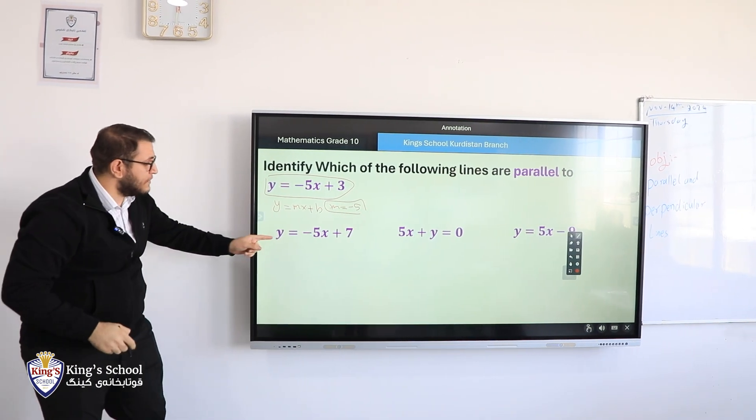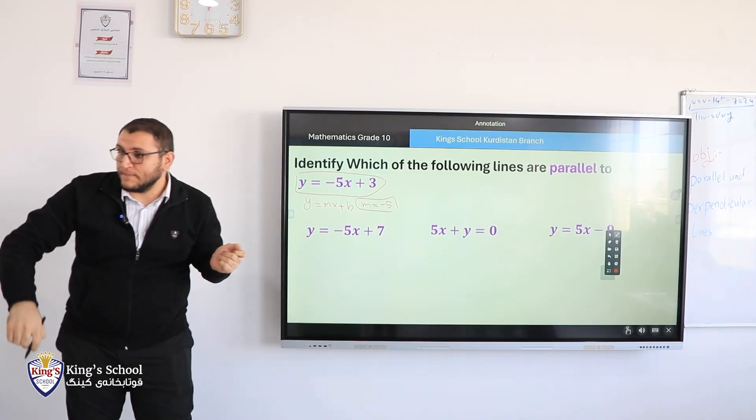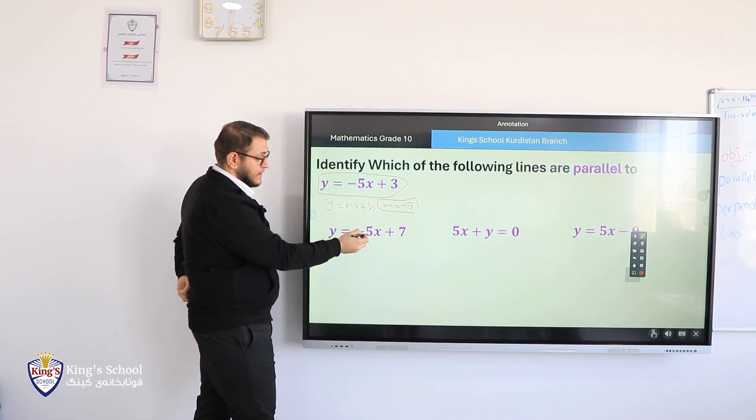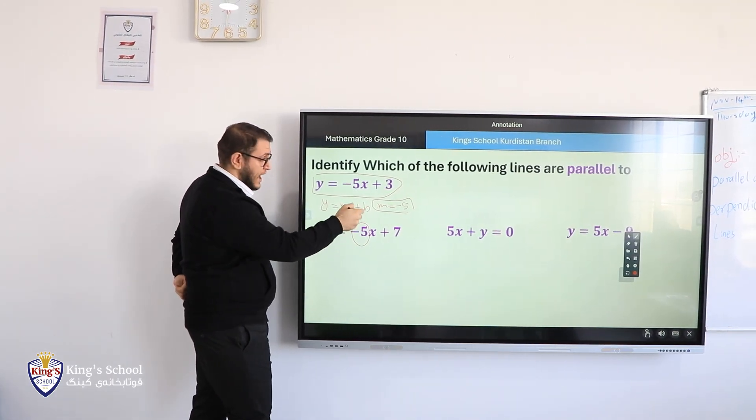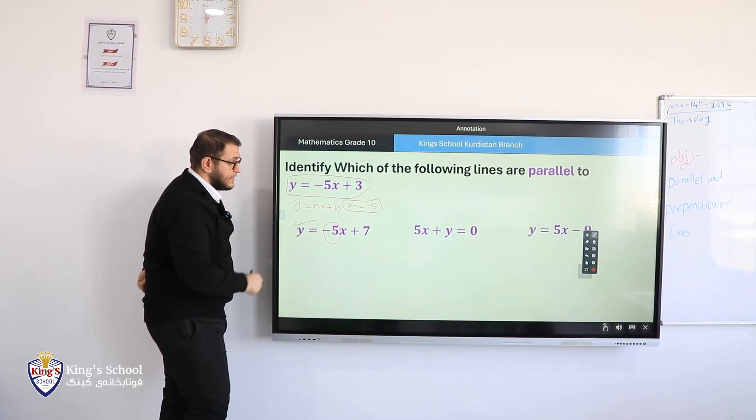Which one from here, they have the same slope, negative 5? Rosh. The first one. Note that. But remember, it should be in this form, Y equals MX plus B. The slope is? Negative 5. So are they parallel? Yes. Since they have the same slope, they are parallel.